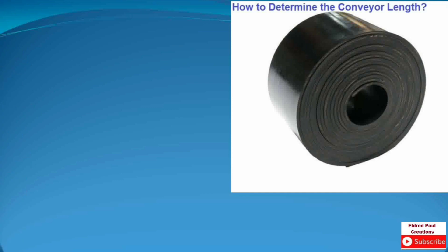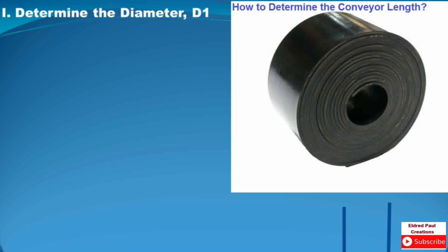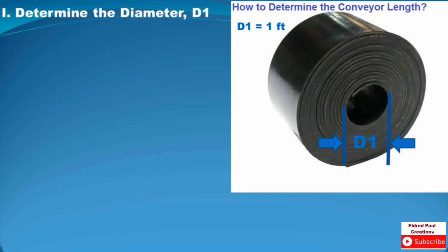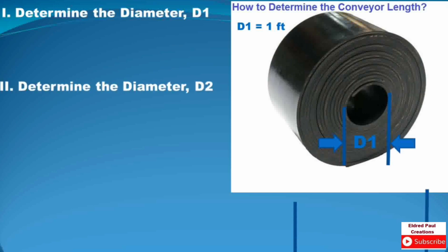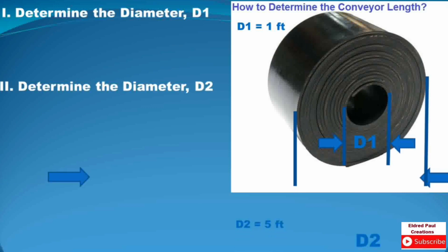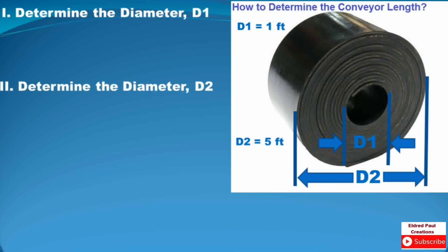So how to determine the conveyor length. First, determine the diameter D1. Based on the arrows, it is where you measure D1. Based on this picture, we measure D1 equals to 1 foot. Next, determine the diameter D2. Based on the arrows, it is where you measure D2. Based on this picture, D2 equals to 5 feet.